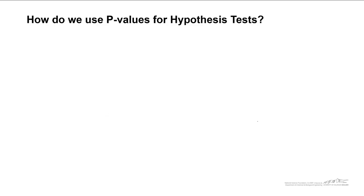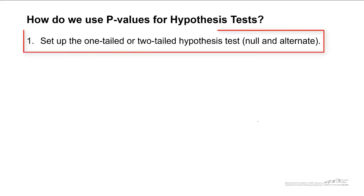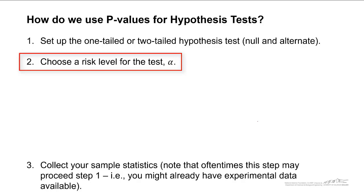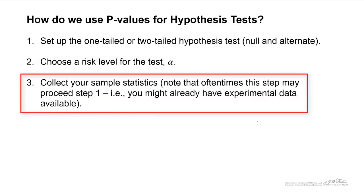How do we use p-values for hypothesis tests? The first step is to set up the one-tailed or two-tailed hypothesis test. You have your null hypothesis and your alternate hypothesis. You choose a risk level for the test, alpha. You collect your sample statistics. Note that oftentimes this step may actually be first. This might go up here because you might already have the experimental data available.